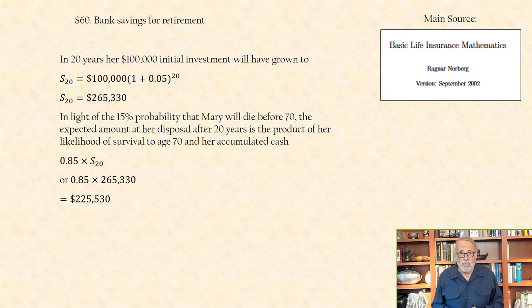In light of the 15% probability that Mary will die before age 70, the expected amount at her disposal after 20 years is the product of her likelihood of survival to age 70 and her accumulated cash, which equals 0.85 times $265,330, or $225,530.